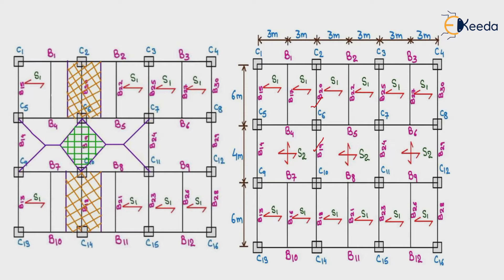Now the question arises: which beam will we design? From the lower row we select V18, middle row V19, and upper row V20. We can select any other beam also — it is up to you. Now we will design the selected beams V18, V19, and V20. But we are seeing V18 and V20 are the same since their span length is the same. Therefore, we will design only two beams — V18 and V19 — and all beam designs will be covered.